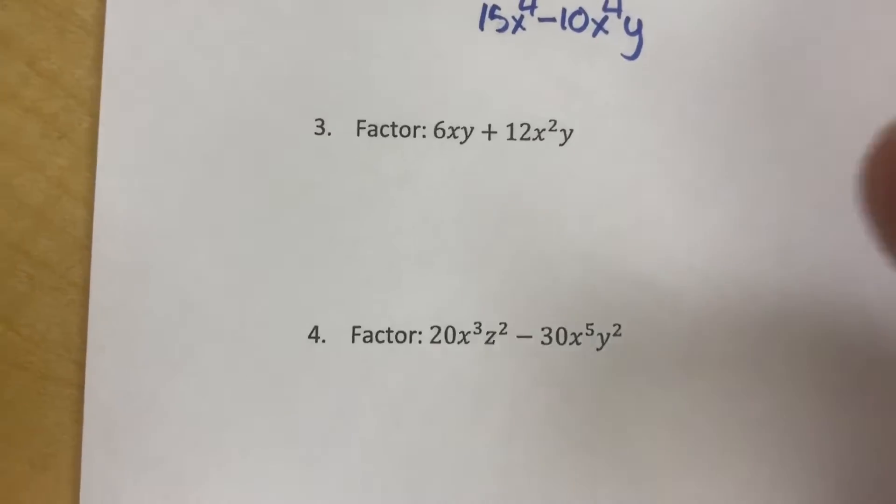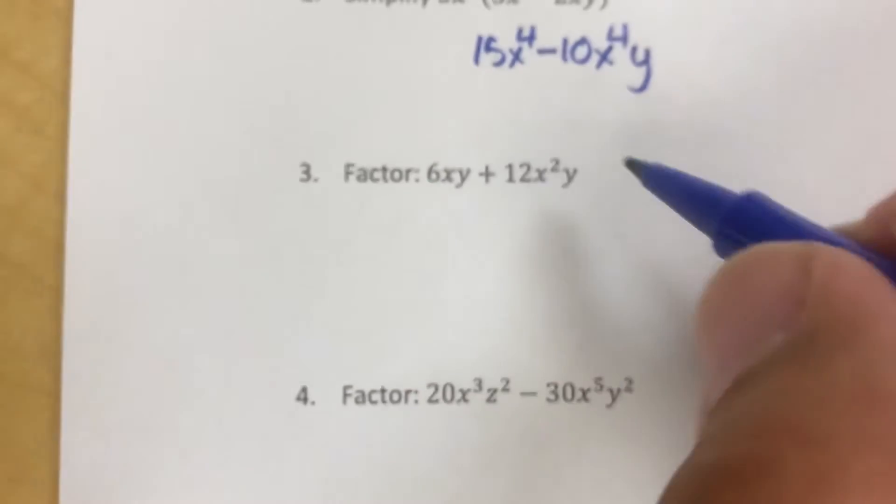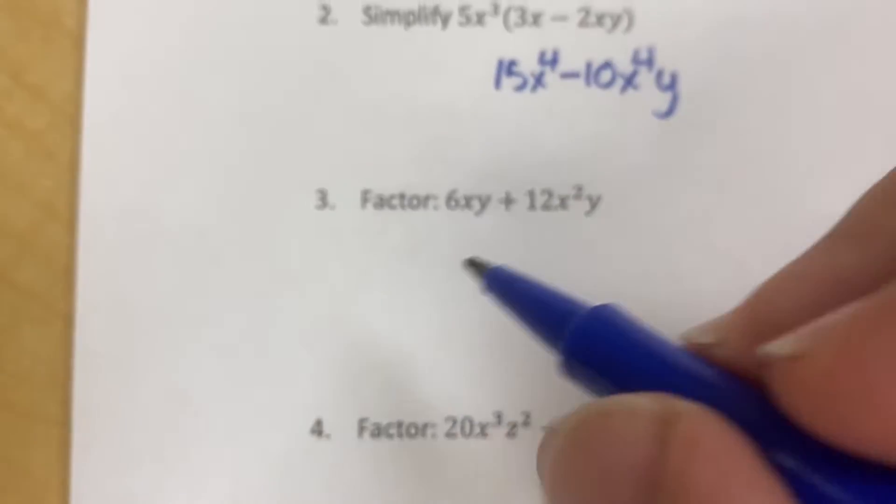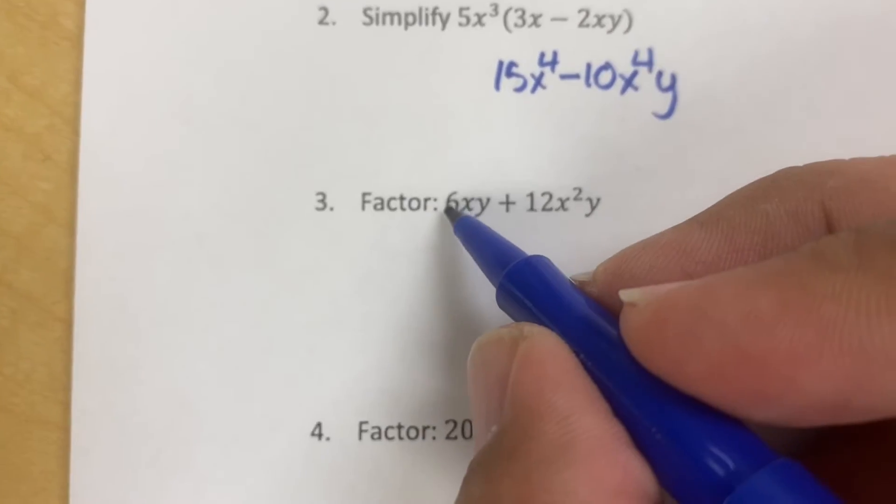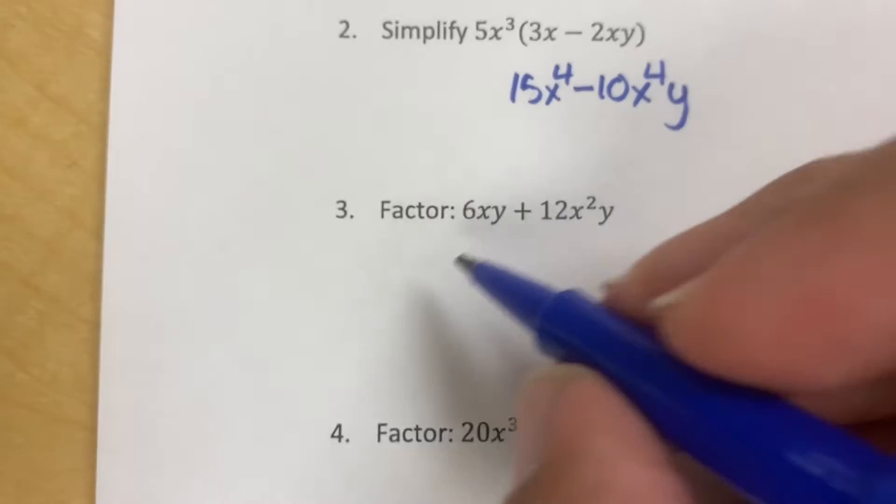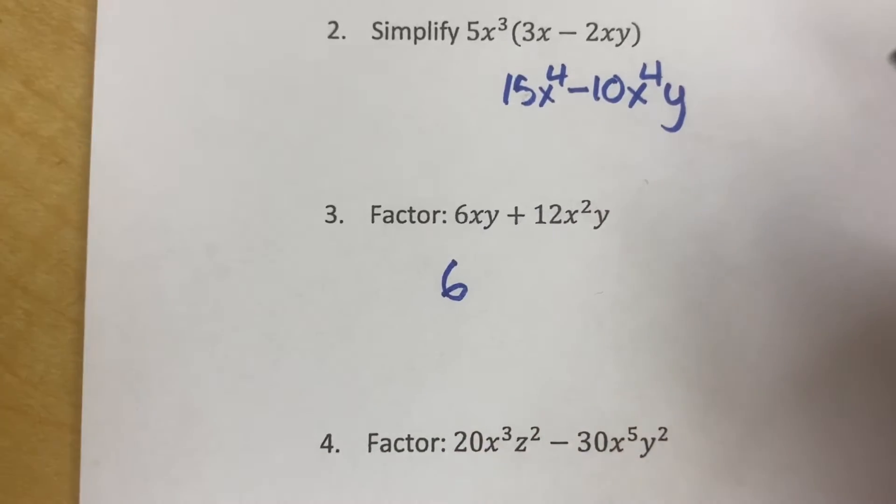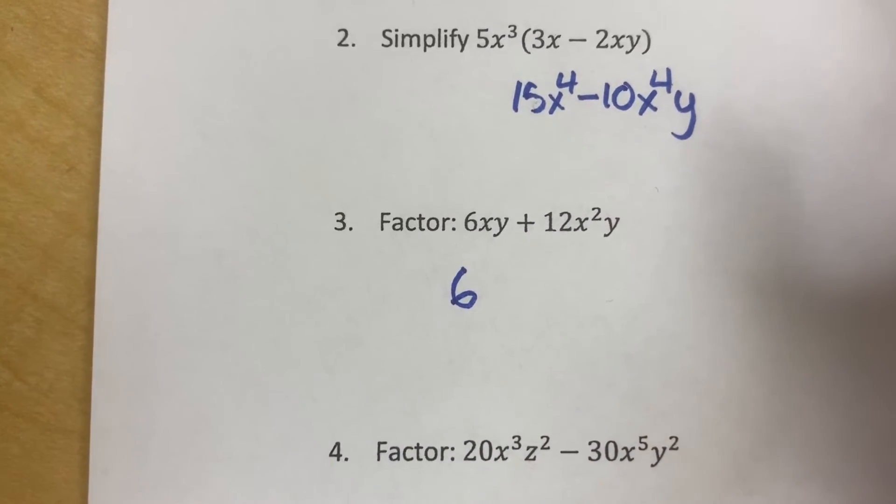Now factoring is the reverse of what we just did. So instead of multiplying in, we're dividing out. So what divides perfectly into 6 and 12? The number is 6. So I'm going to divide everything by 6 in just a second.